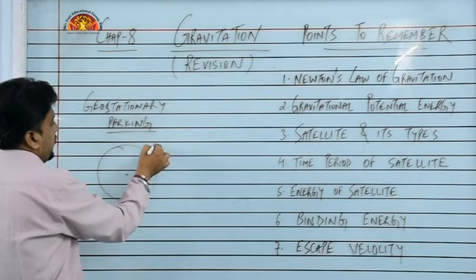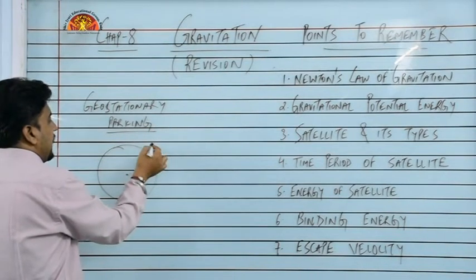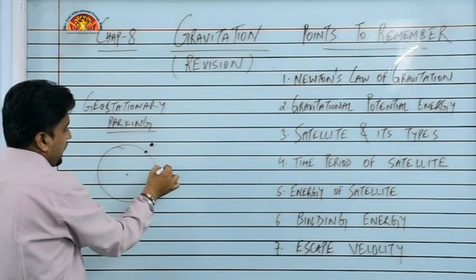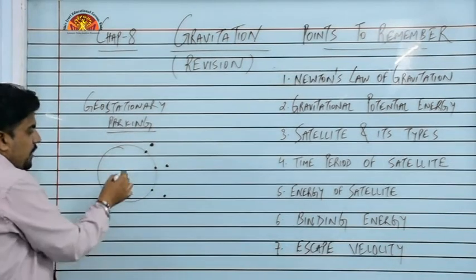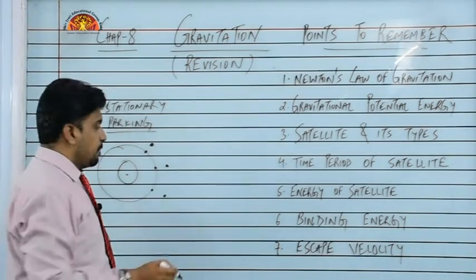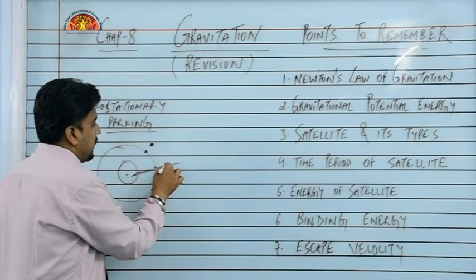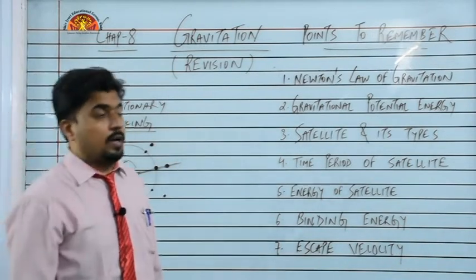Like if this is earth, and this satellite is at this point. If earth rotates and this point moves here, then this satellite also moves here. This point moves here, then satellite also moves here. So basically, if someone observes from earth, it will appear that this satellite is at a fixed point with respect to earth. And this is around the equator.